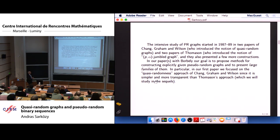In our papers with Borbély, our goal is to propose methods for constructing explicitly given pseudo-random graphs, and to present large families of them. Let me emphasize once more that in our papers, including the first one, which we have just finished, we are focusing on explicit constructions. In particular, in our first paper, we focused on the quasi-randomness approach of Chung, Graham, and Wilson, since it is simpler and more transparent than Thomason's approach, which we will study in part two and later.